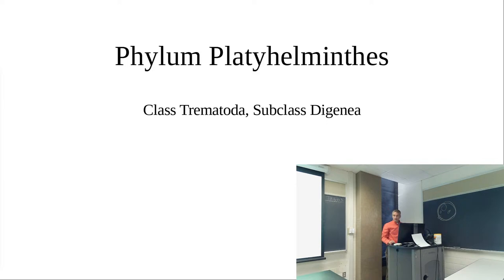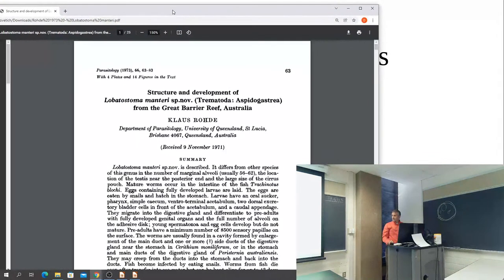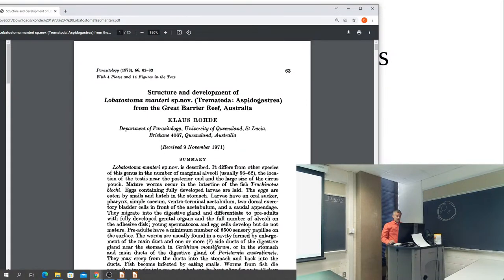So we finished up the acanthobothria. That was three body forms — they have a large attachment organ and large ventral sucker, also called an opisthaptor. The example we used was Lobatostoma mantraii. This was published in 1973, when they first identified that parasite.